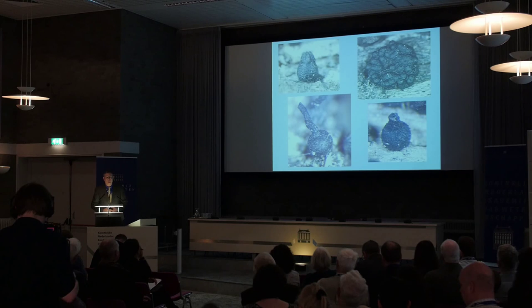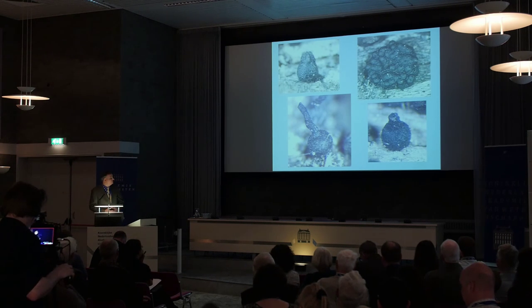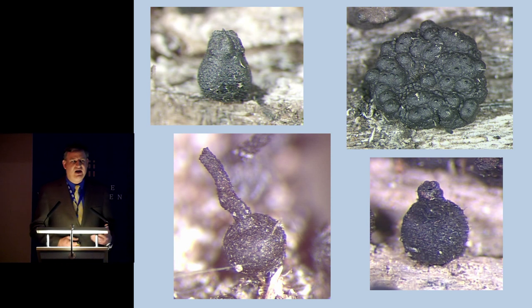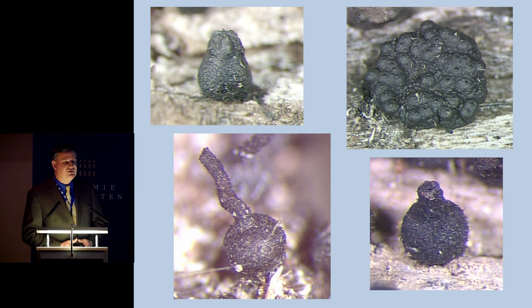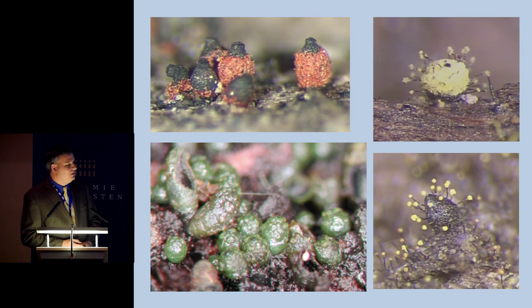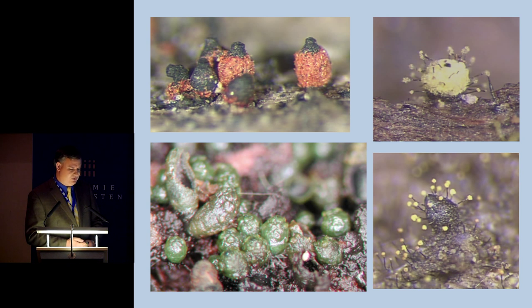Most people, when they think about the class Sordariomycetes, think of the traditionally common name, the Pyrenomycetes. Most of these occur as perithecia, although there are a few cleistothecial genera. Most of them occur singly, although some can be clumped together in stroma and be quite large. The majority are less than one millimeter in diameter — little tiny black dots — because most are dark colored. Although there are a few taxa, especially those in the Hypocreales, that actually have some nice color to them.